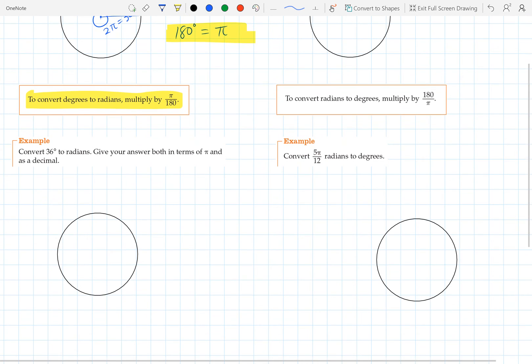So looking at this example, convert 36 degrees to radians. So 36 degrees would look roughly like this. That would be 36 degrees there. And so to put it into radians, we'd go 36 times pi over 180. And so that would give us 36 pi over 180.